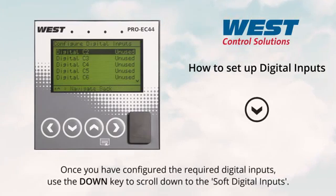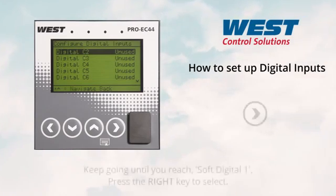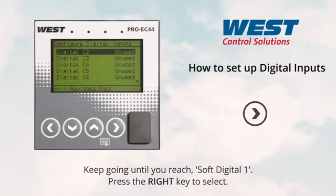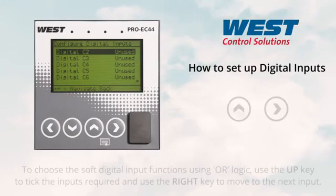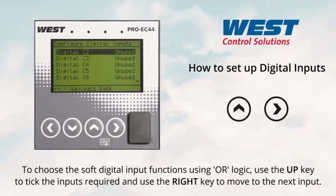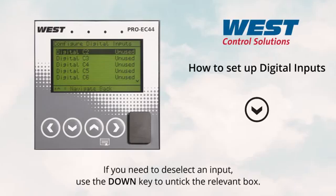Once you have configured the required digital inputs, use the down key to scroll to the soft digital inputs. Keep going until you reach soft digital input one, then press the right key to select. To choose the soft digital input functions using OR logic, use the up key to tick the inputs required and use the right key to move to the next input. If you need to deselect an input, use the down key to untick the relevant box.